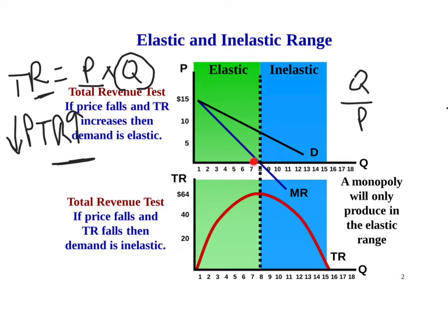We can make a conclusion that the monopolist is going to produce in this elastic range. Once you get to the ninth, tenth, eleventh, twelfth unit, this is a bad idea. Because once the monopolist produces here, if they lower the price to get those greater quantities, they're going to see their total revenue decrease. We also know that costs are going to be greater at greater quantities. So not only would they see their total revenue decrease in the inelastic range, they'd also be subject at greater quantities to higher costs.